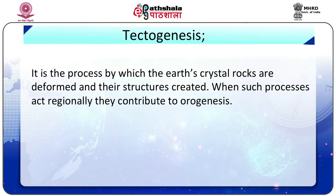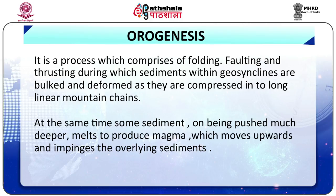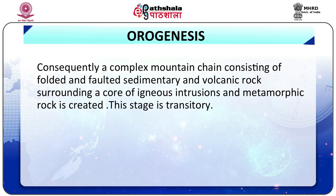The next stage is tectogenesis — the process by which the earth's crustal rocks are deformed and their structures created. When such processes act regionally, they contribute to orogenesis. Next is orogenesis itself: a process comprising folding, faulting and thrusting, during which sediments within geosynclines are buckled and deformed as they are compressed into long linear mountain chains. At the same time, some sediments pushed much deeper melt to produce magma which moves upward and intrudes the overlying sediments. Consequently, a complex mountain chain consisting of folded and faulted sedimentary and volcanic rock surrounding a core of igneous intrusions and metamorphic rock is created.